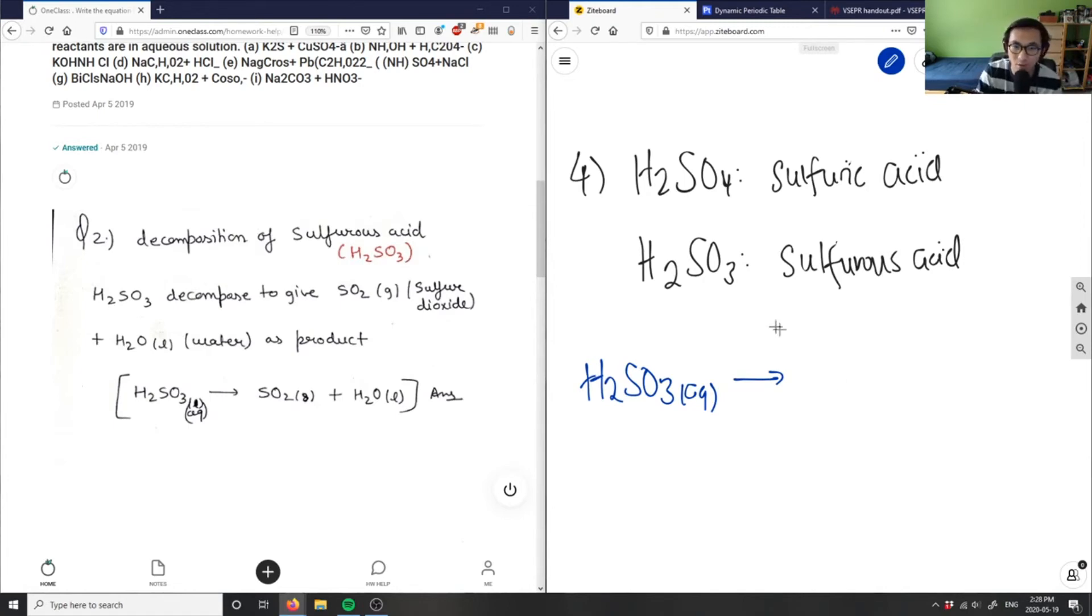So we're going to say that this is going to give us SO2, which is sulfur dioxide. SO2 is in gas form and H2O, which is liquid form here. So this here is our solution for this problem.